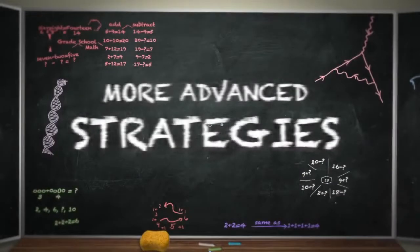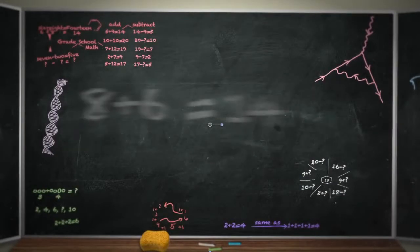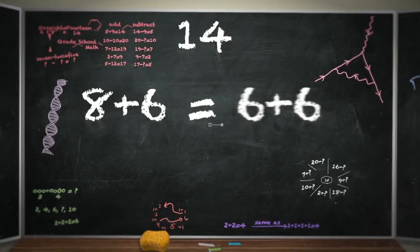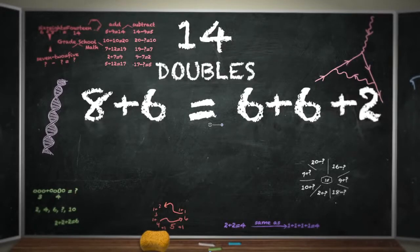Instead, what we would really love is for kids to have some more advanced strategies. If we're doing 8 plus 6, we'd want them to think, that's like 6 plus 6. They're doubles. They know their doubles really well. So it's like 6 plus 6 and an extra 2.